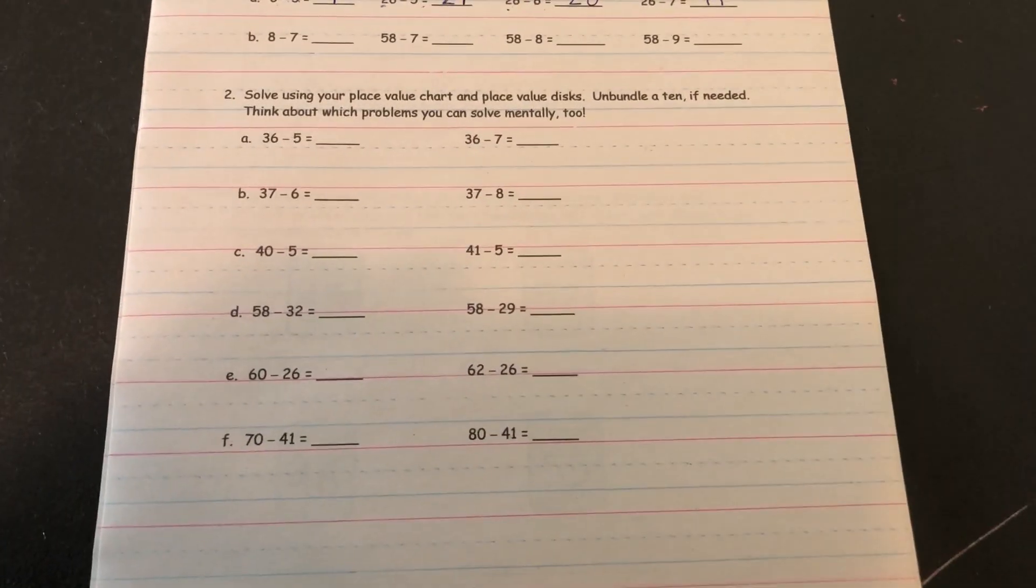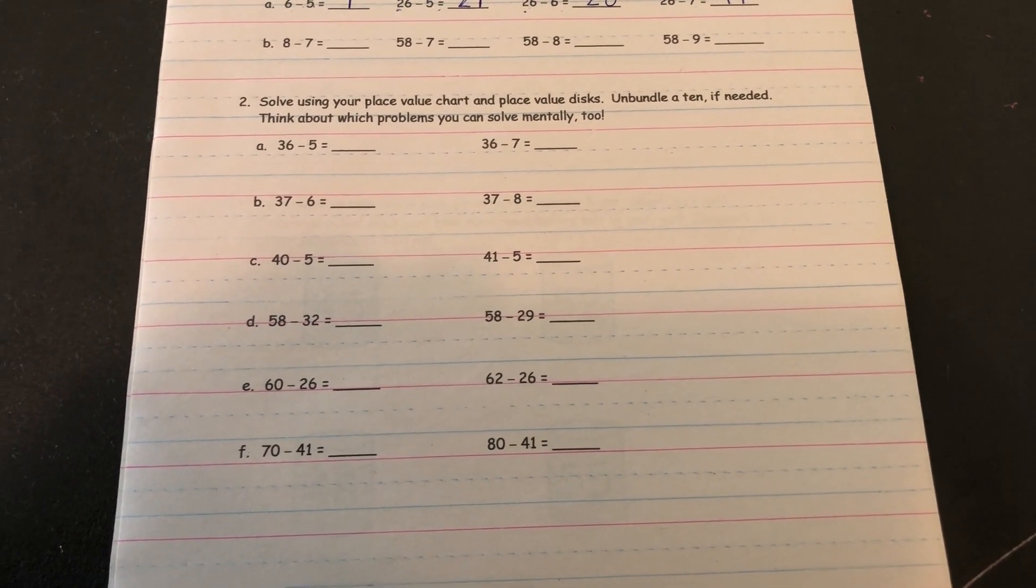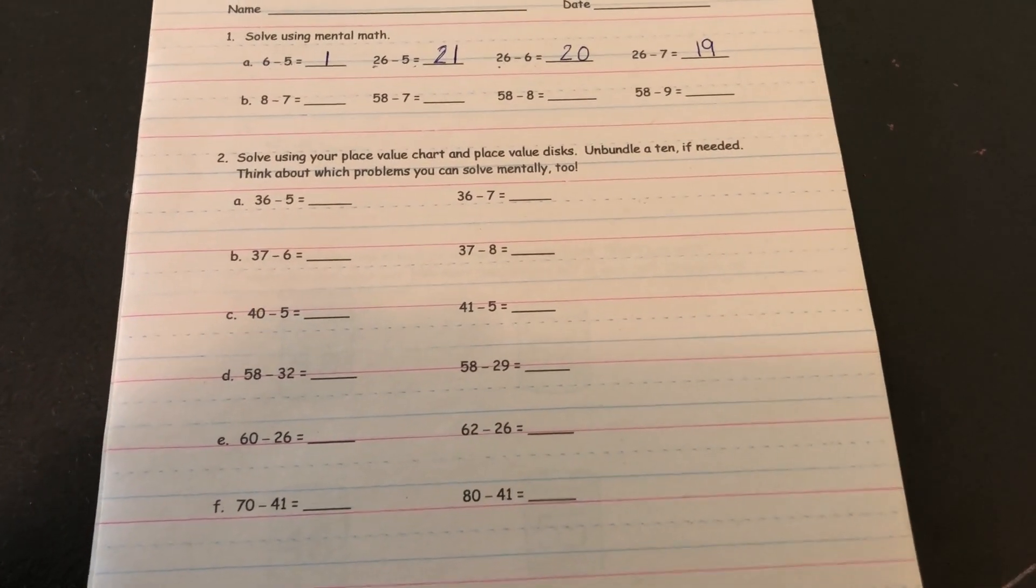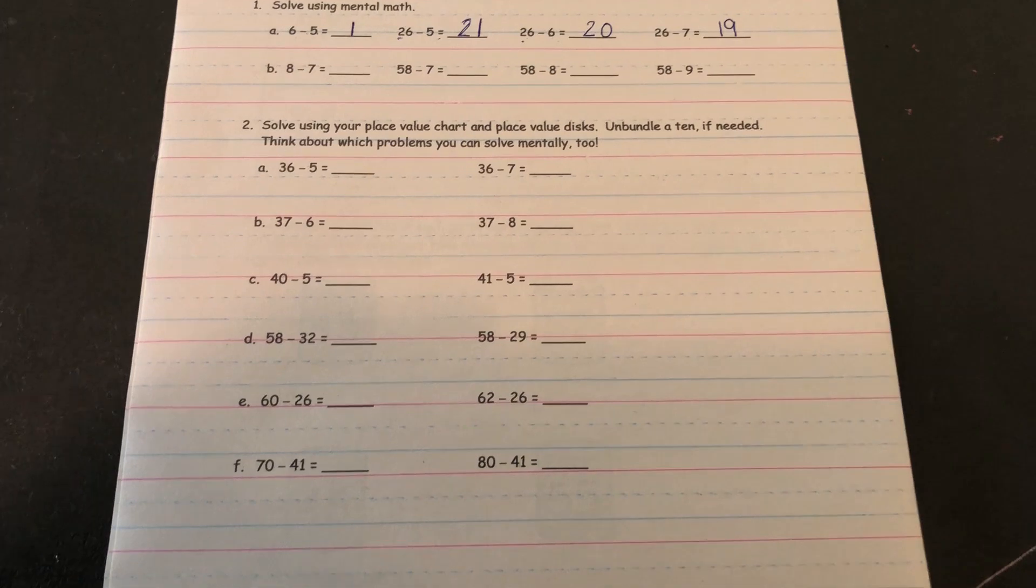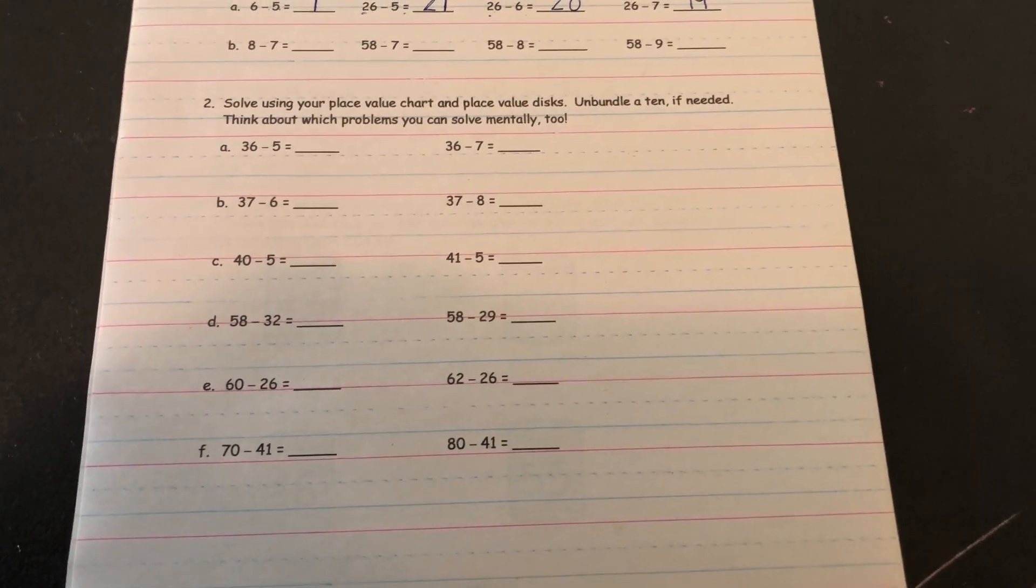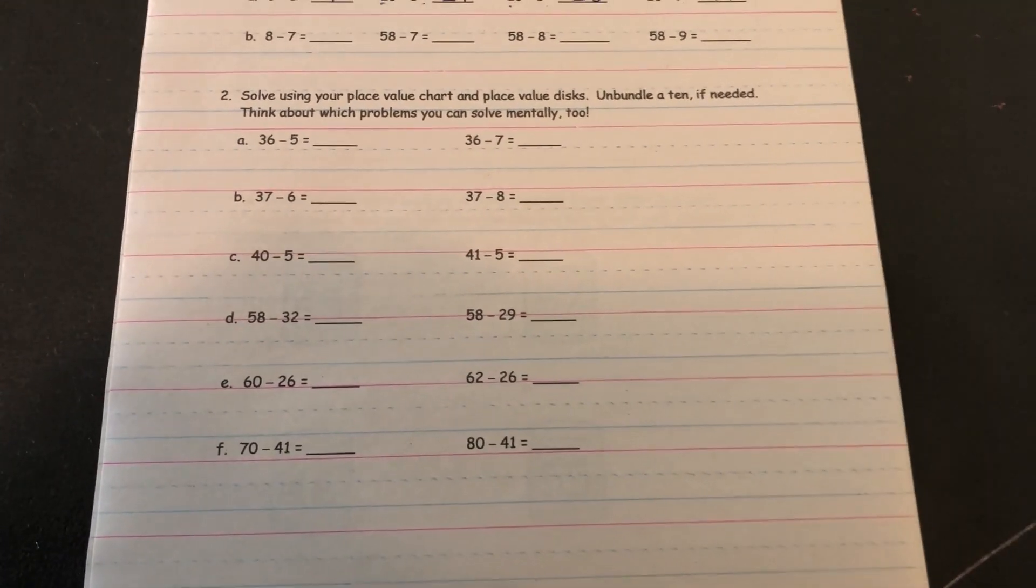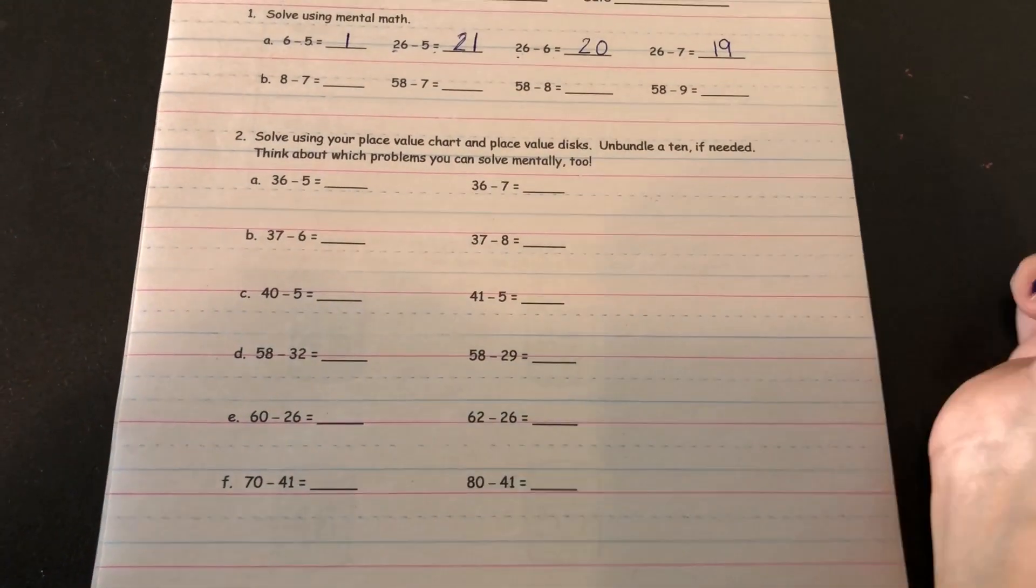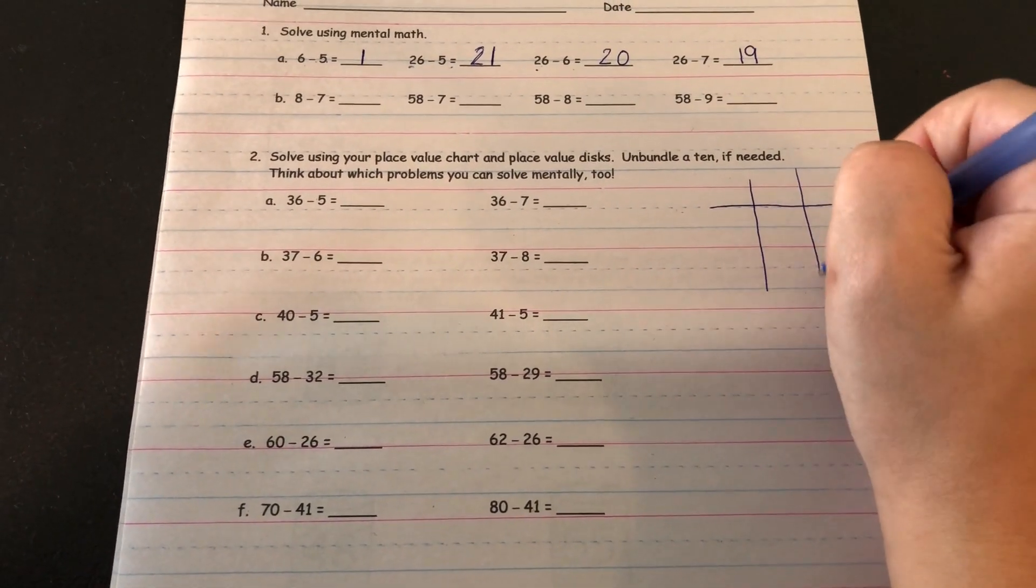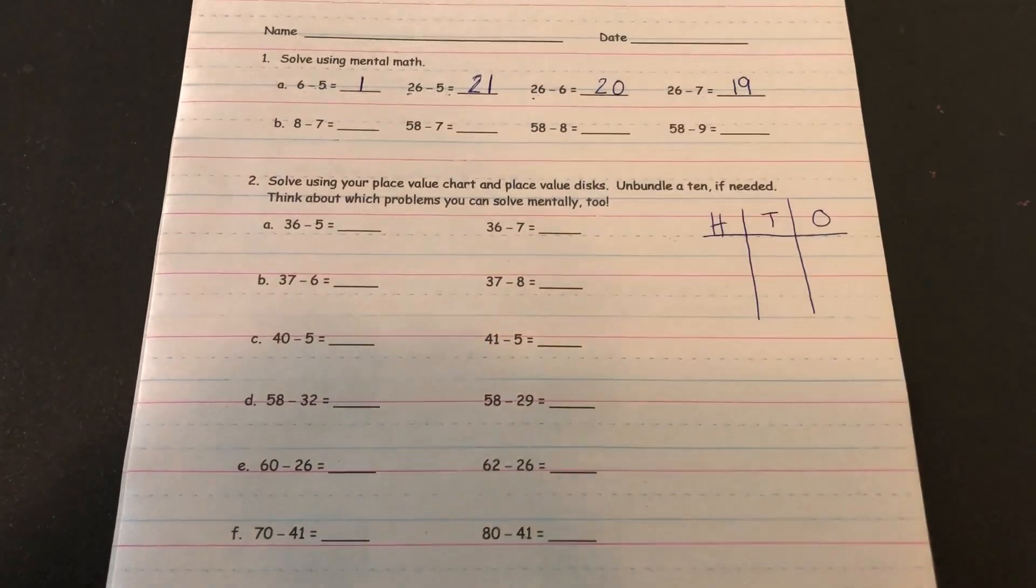All right, for these ones it says to solve using your place value chart and place value disks. Unbundle a 10 if needed. So if you have your place value chart and disks you are more than welcome to use those. If you forgot to bring those home, you can try to solve as many of these as possible in your head, and then the ones that you get stuck on I would recommend just drawing a chart like this. Just a regular place value chart for ones that you're stuck on and I'll show you what I mean.